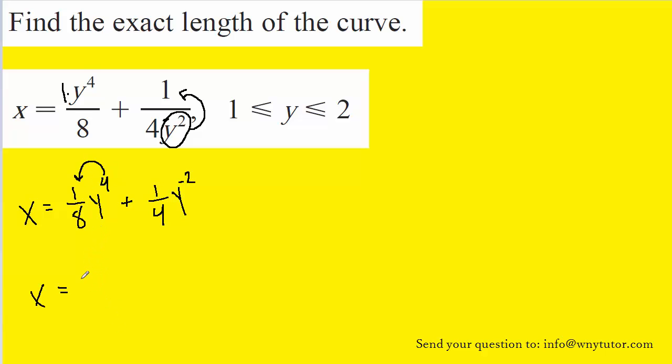So 4 multiplied by 1/8 would be 4/8 or 1/2 if we reduced it, subtract 1 from the exponent to make y to the third.